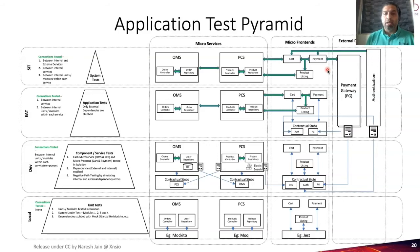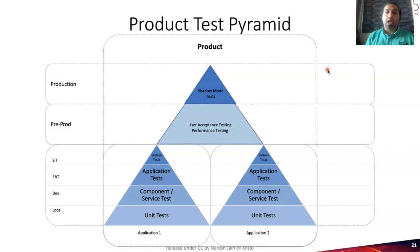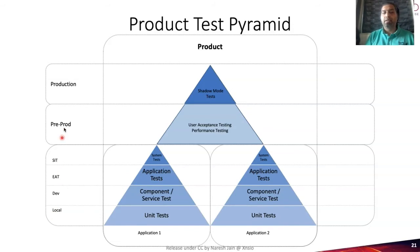Then you have system tests in an integrated environment where green arrows do go to external dependencies — you're testing as a complete holistic system, not just the application. Moving further, you can stack multiple applications together and put another pyramid on top: user acceptance and performance tests, then shadow mode tests which is essentially testing in production. That's the complete product test pyramid, with N application test pyramids below, running across environments: local, dev, EIT, SIT, preprod, and production.